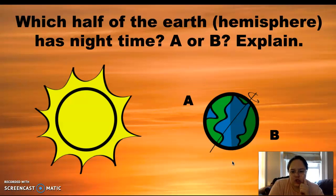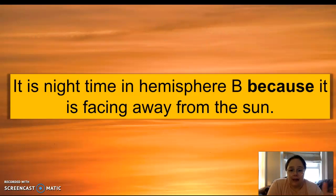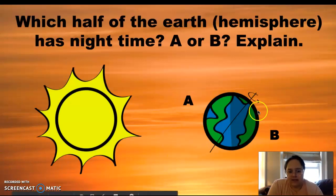So go ahead and think about this question in your head. I want to know, is A or B experiencing nighttime and why? You want to look at which one is facing the sun. Whichever hemisphere is facing the sun is going to have daytime because the sun is out. So that means that B, it's facing away from the sun. You can even see that there's a shadow here. A would be daytime right now, whereas B would be nighttime.